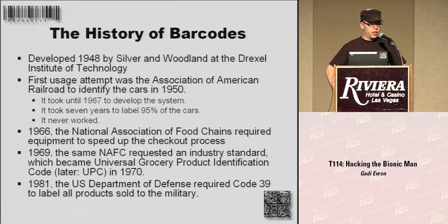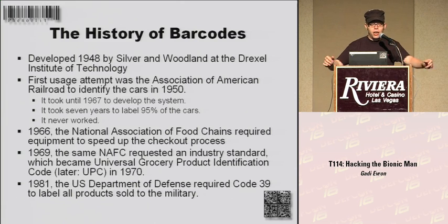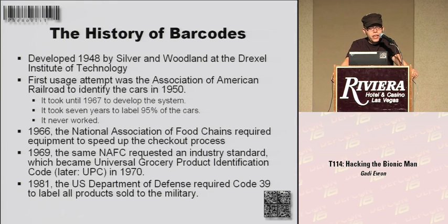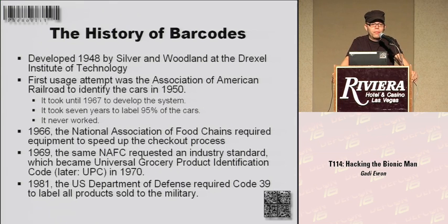What about the history of barcodes? They got developed in 1948 by two people. The first usage attempt — and that's actually really funny — was the American railroad people that tried to barcode all the cars they have. It took them 17 years to label all the cars, and then the system didn't work. Like, it never did. At that point in time, people figured barcodes are useless.